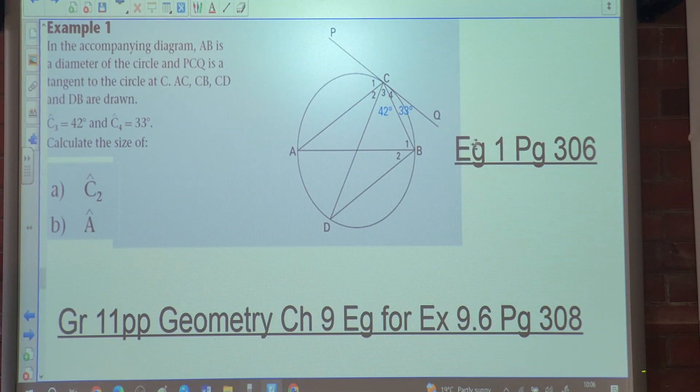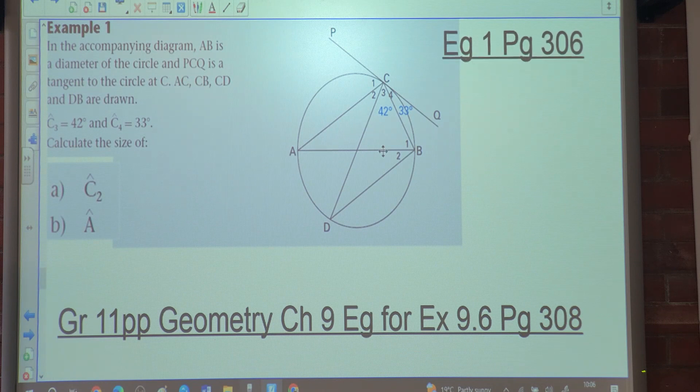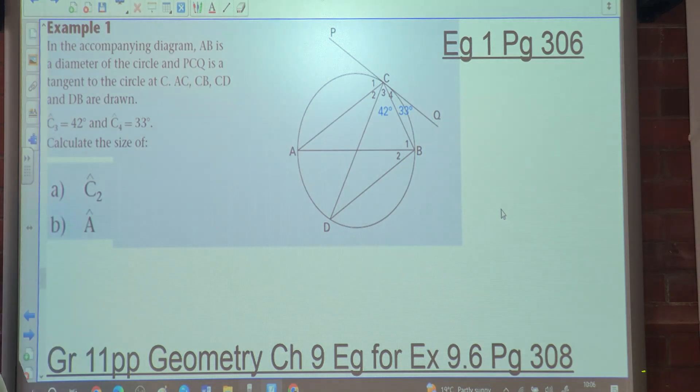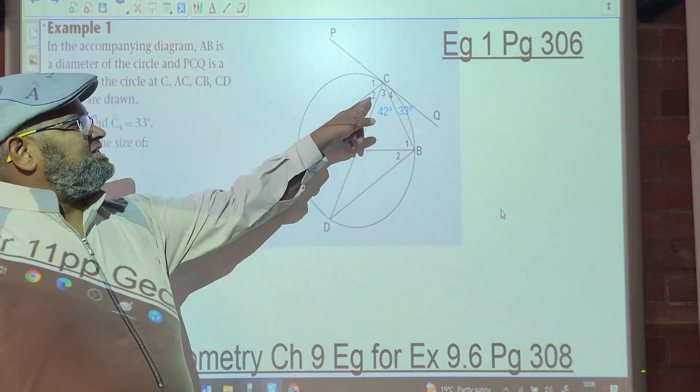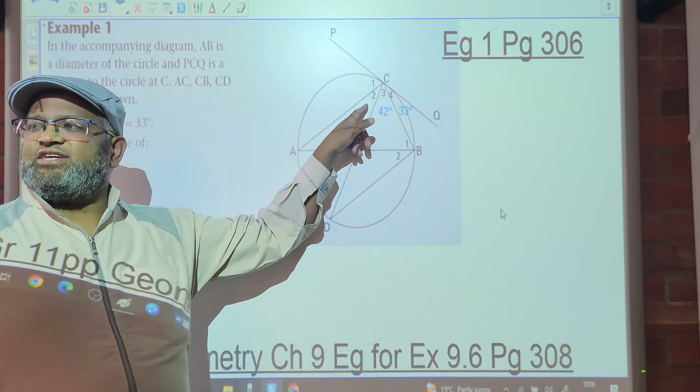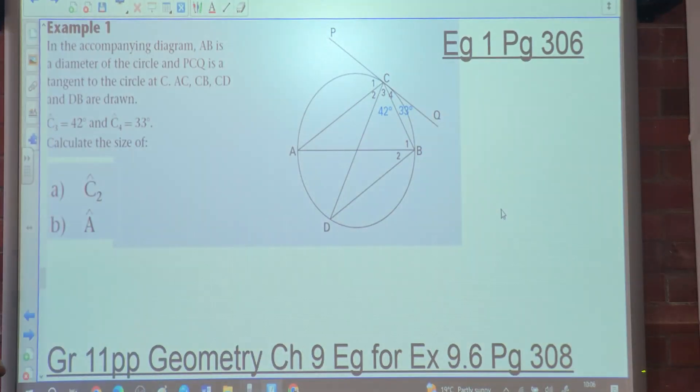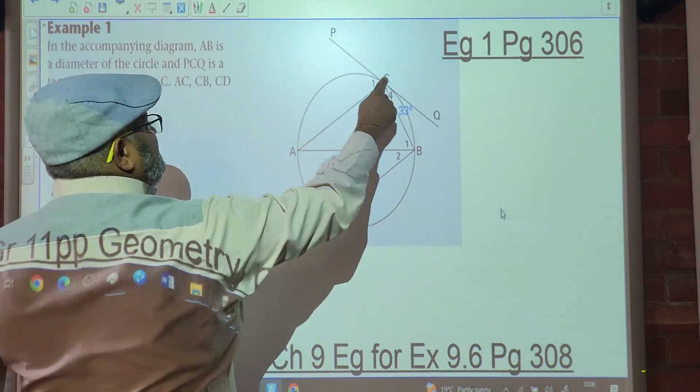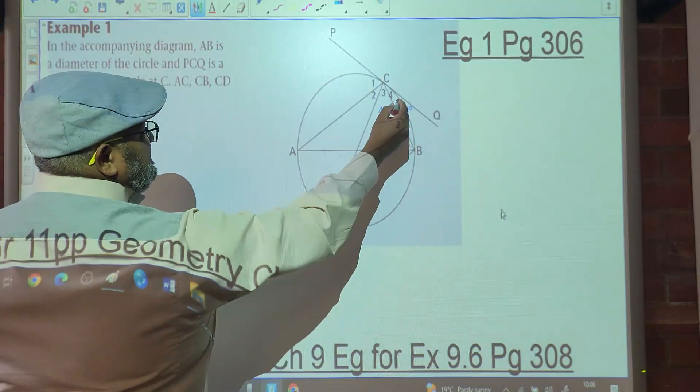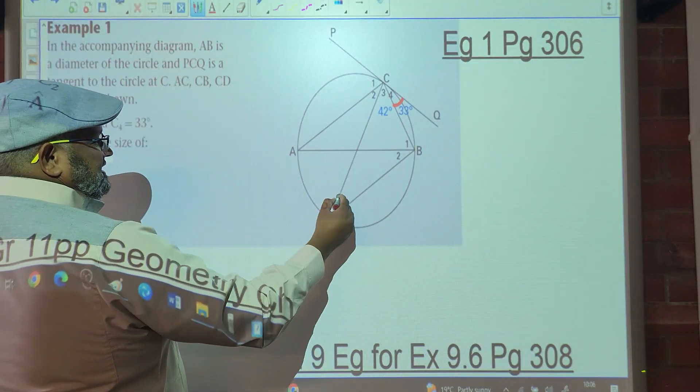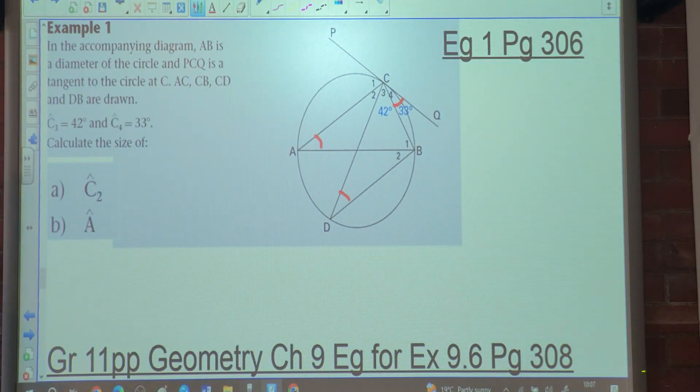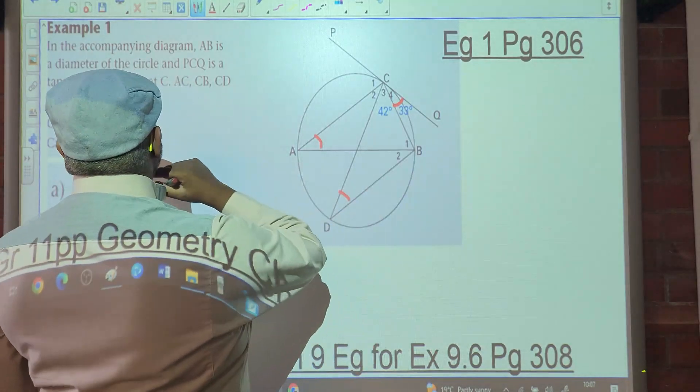So we are told that in the accompanying diagram, AB is a diameter. People, if AB is a diameter, what do we know? Many things, he says. But if AB is a diameter, then the combination of angles C2 and C3 is 90 degrees, angle in semicircle. We are told that PCQ is a tangent. What do we know from there? That C4 is equal to angle D. Is it also equal to angle A? Why? Tangent chord theorem. That's the one we just spoke about.